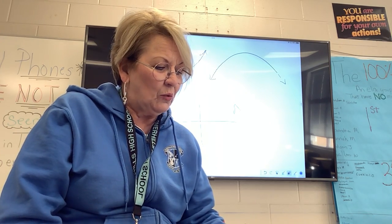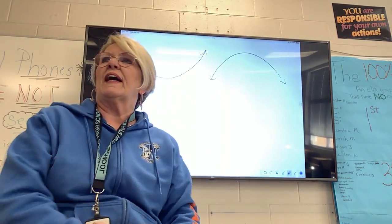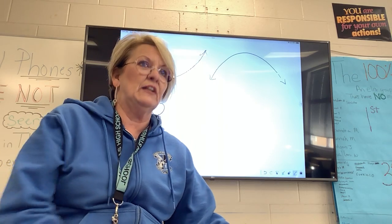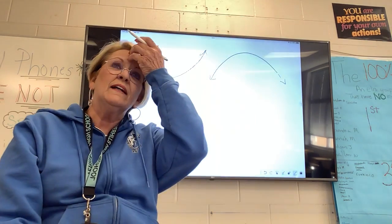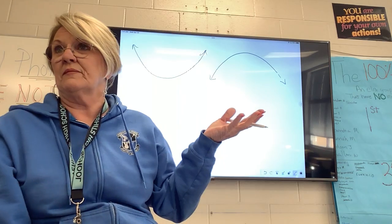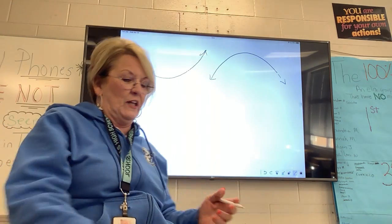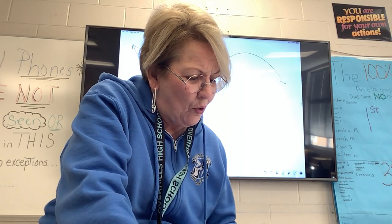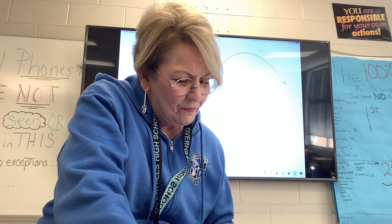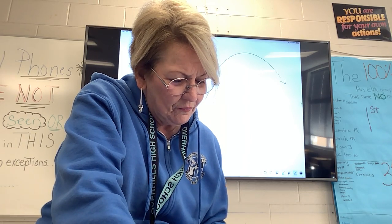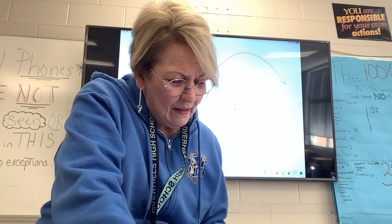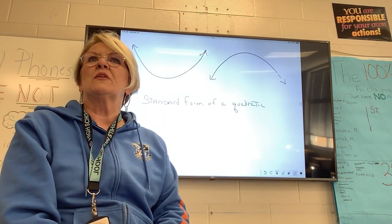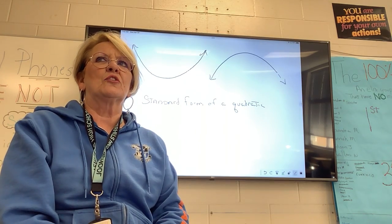Now, there is a way to know what it's going to look like without even graphing it. There's a way to know whether it's going to be a smiley-looking thing or a frowny-looking thing just by looking at the equation. Let's talk about standard form, because that's the main form of a quadratic. You're always going to have to make sure your equation is in standard form.